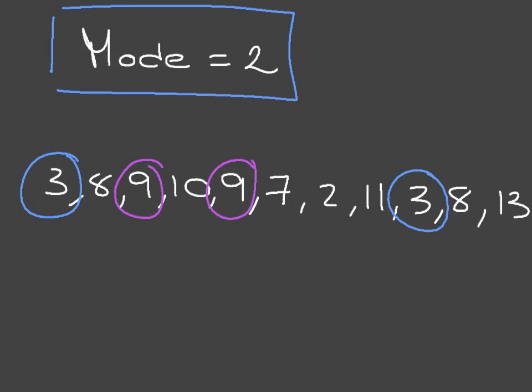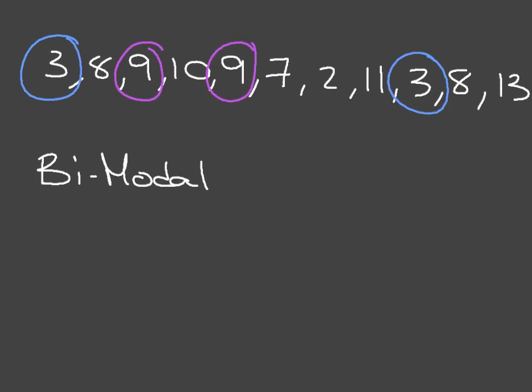When this happens, we say that the data, or the list of numbers, is bimodal, which simply means that there are two modes.